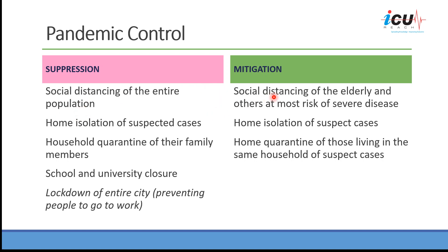Compared to social distancing of elderly and others at most risk of severe disease in the mitigation strategy. Those patients at most risk of severe disease are patients above 65 years old, patients with chronic diseases such as chronic respiratory disease, congestive heart failure and other cardiac diseases, COPD, diabetes, hypertension, cancers, immunosuppressed patients, and possibly obesity.